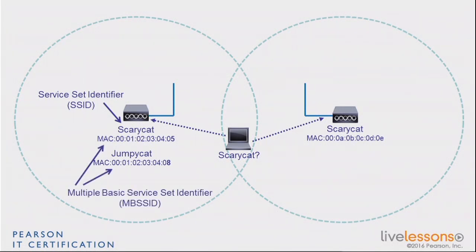When you have more than one SSID and more than one BSSID per access point, you support what we call MBSSID, or Multiple Basic Service Set Identifier. Not all vendors support this — some only support one single SSID because they have only one MAC address on that access point. Enterprise class access points typically support more than one, and the maximum number of SSIDs you can support is directly dependent on how many MAC addresses the vendor burnt into the access point.